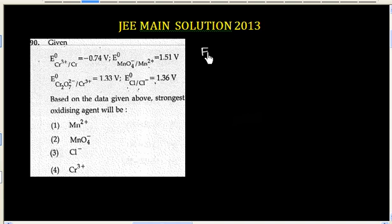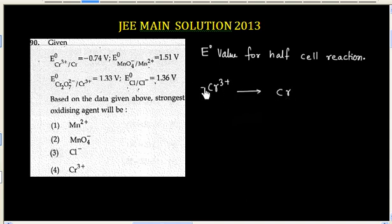So we have been given E° value for half-cell reactions. First we have chromium 3+ to chromium, and E° is minus 0.74 volt, so this is reduction.